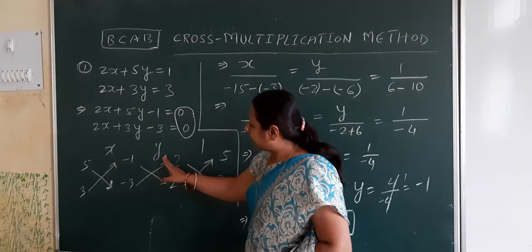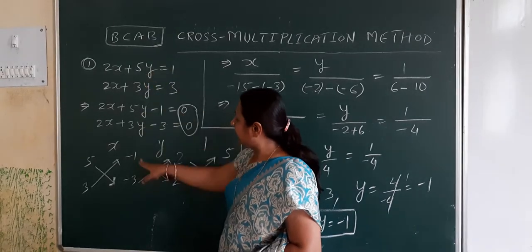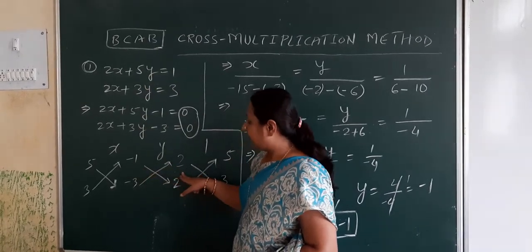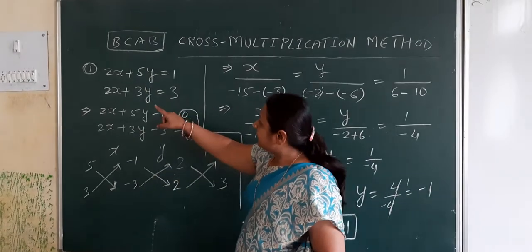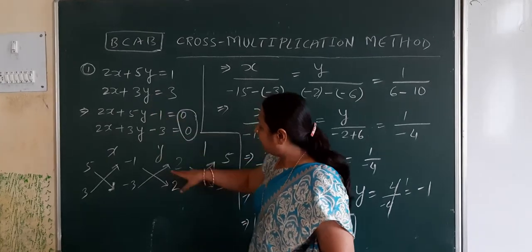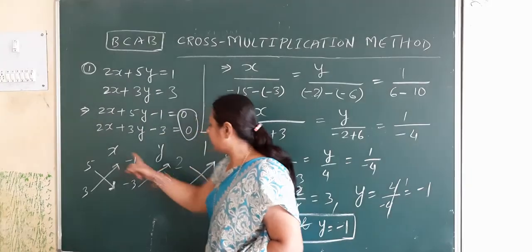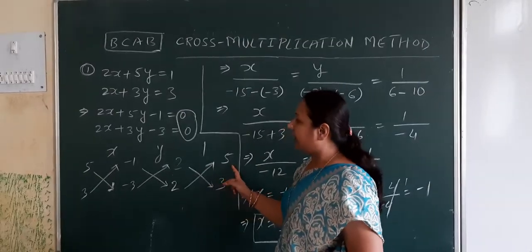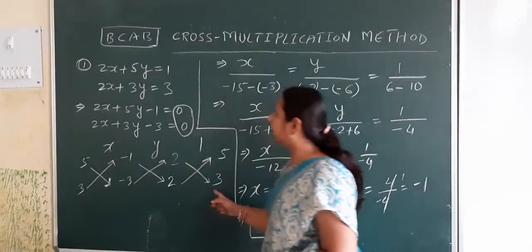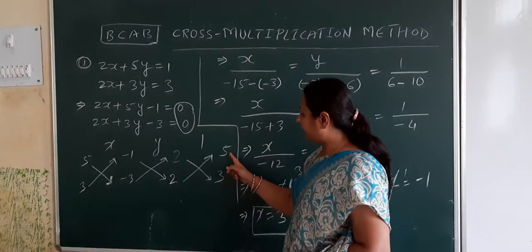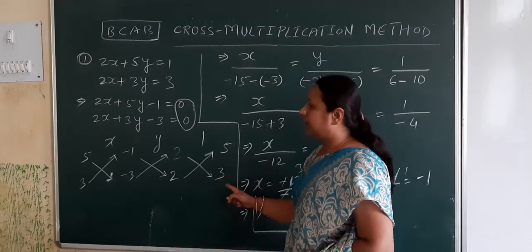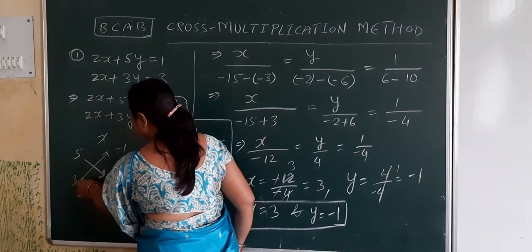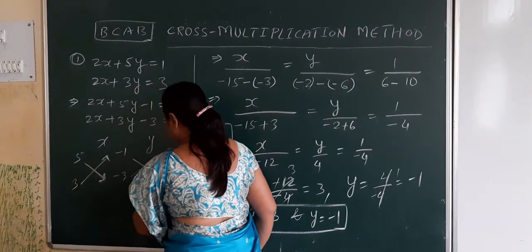Now we come to y. The left hand side of y uses b, c, a. The coefficient of x is 2 and 2. Then repeat the b term: 5 and 3. Make the cross multiplication signs — this is required.